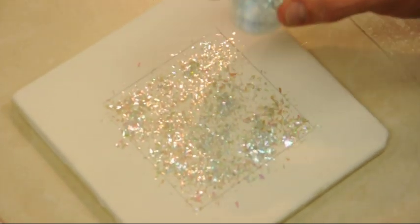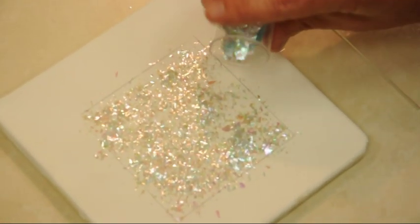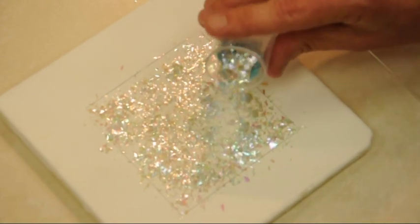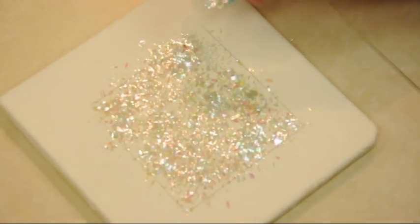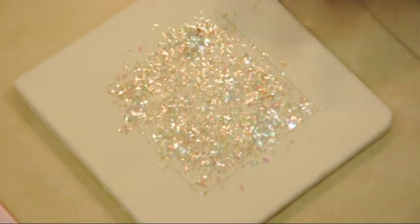After this piece has been fired and you take it out of the kiln, you're going to need to take a Scotch-Brite pad and just gently rub the surface of the glass and clean it to remove any of the loose dichroic.